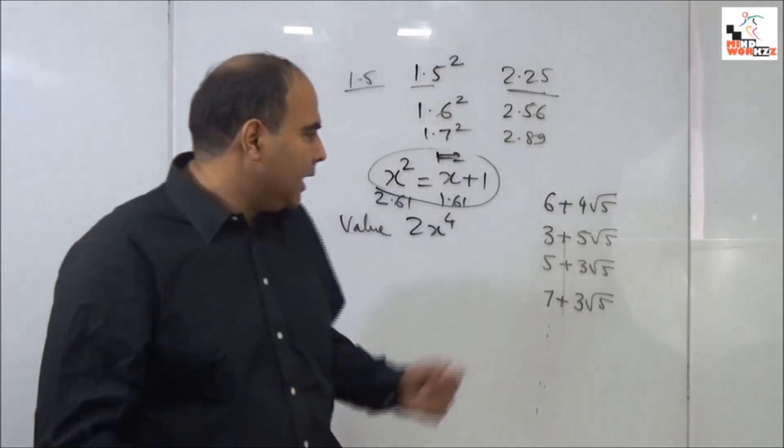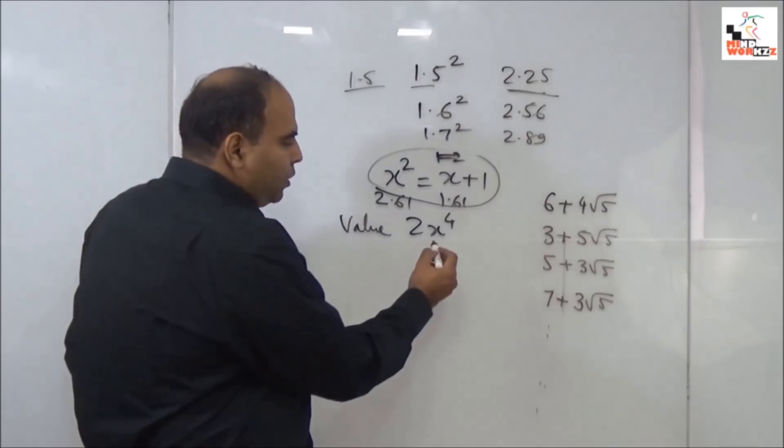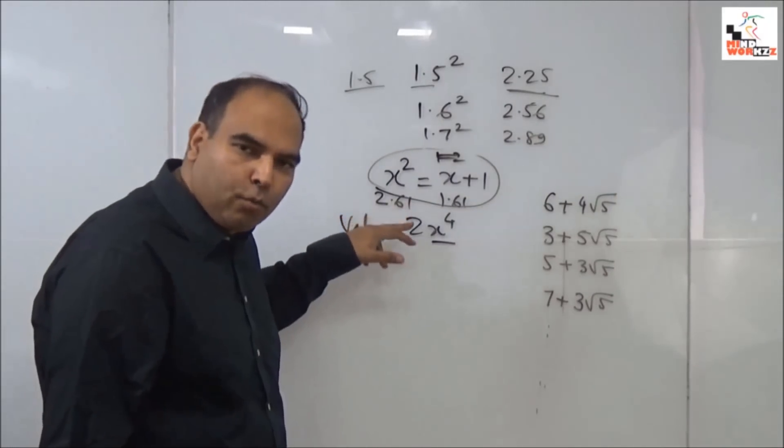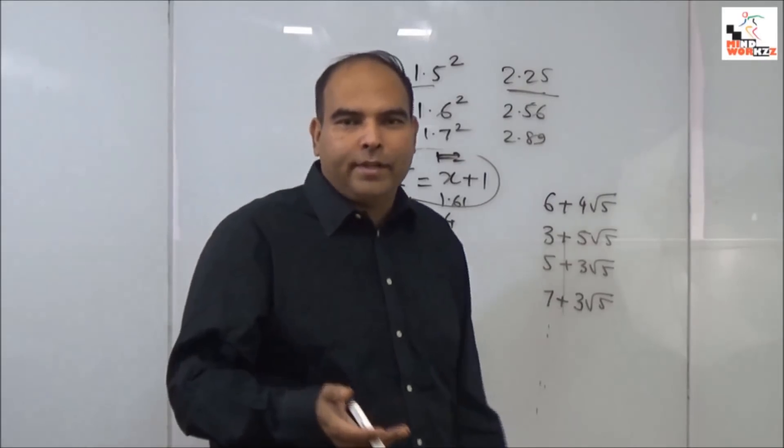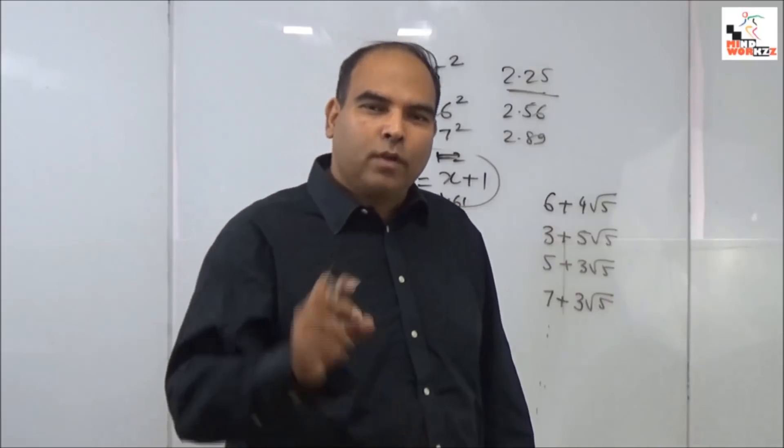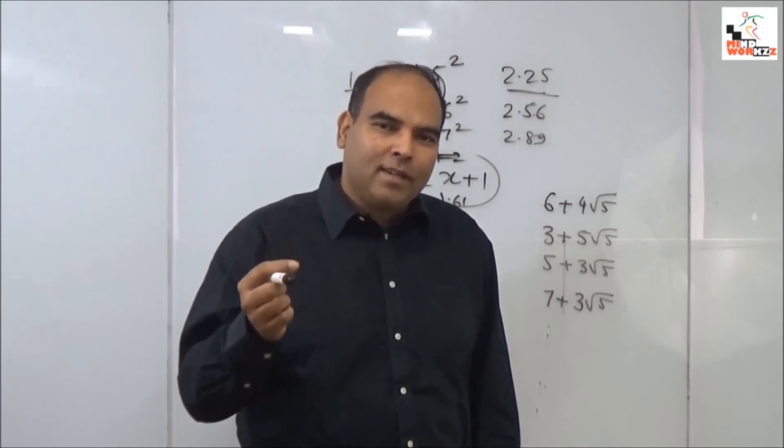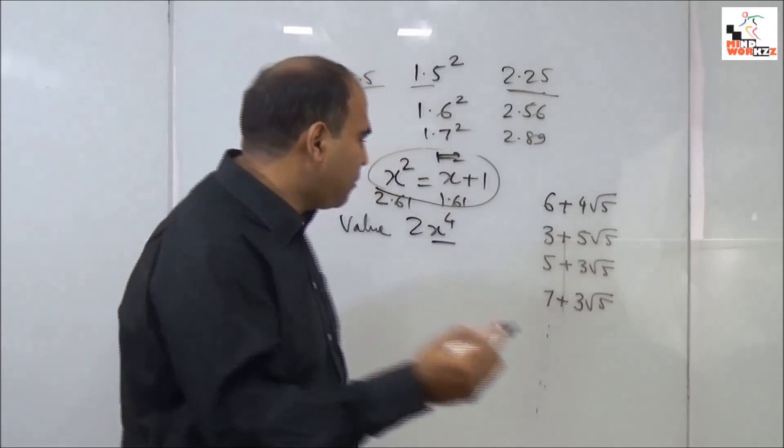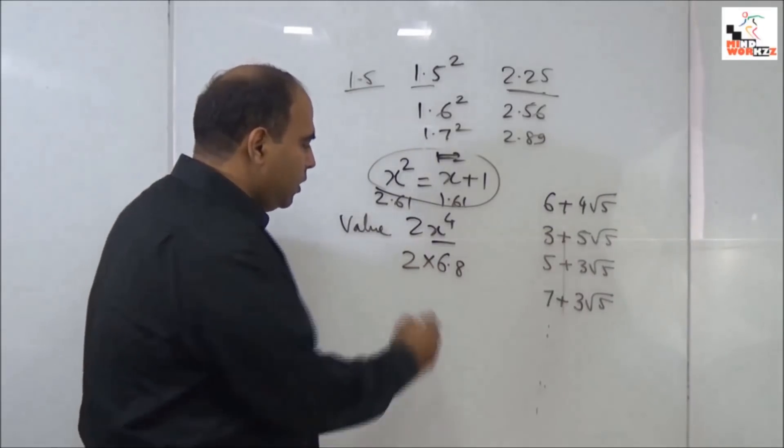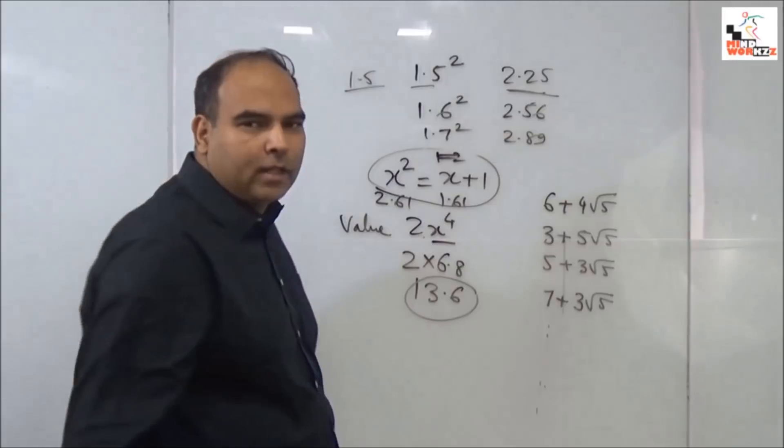Once you get that x is 1.61 and x² is 2.61, to evaluate x⁴ you need to do 2.61 × 2.61. Since 26² = 676, 2.6² will be 6.76, so give or take a little bit more, 2.61² will end up at 6.8. So an approximate value of 2x⁴ is 13.6.